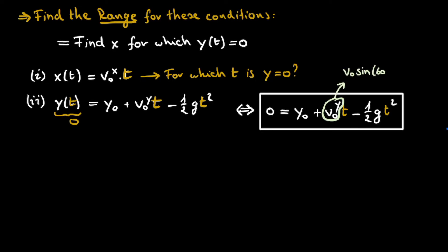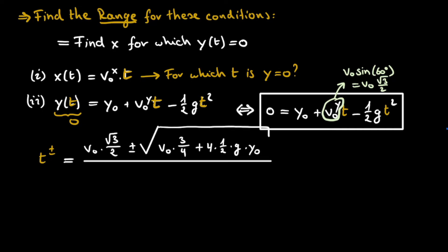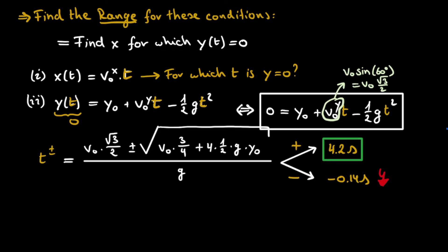We solve the quadratic equation, knowing there is a plus and a minus solution. The plus solution is 4.2 seconds, and the minus solution is minus 0.14 seconds. Because negative times don't make physical sense in this scenario, we drop the negative solution, leaving us with t equals 4.2 seconds. This is the time after the ski jumper leaves the ramp that she will reach the ground again. To finish the exercise, we fill this time into the first equation to find the x position.